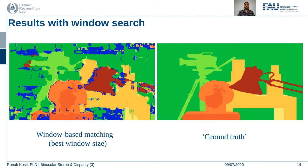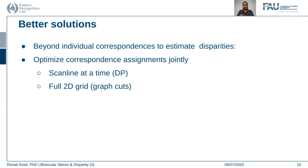There are solutions beyond individual correspondences for finding the disparity or depth map. One approach is to optimize correspondence assignments jointly — either processing one scan line at a time or performing a 2D grid search across the whole image to find proper window sizes. These are more complex approaches but provide better solutions to finding disparity maps.